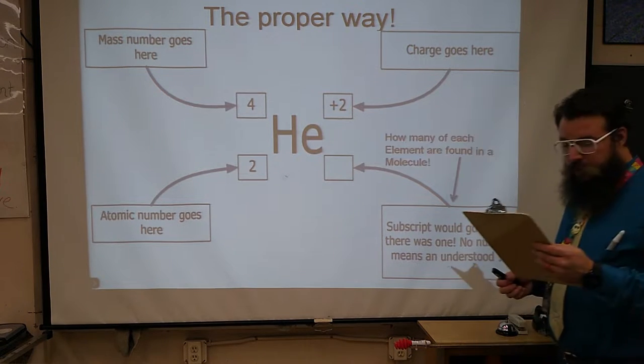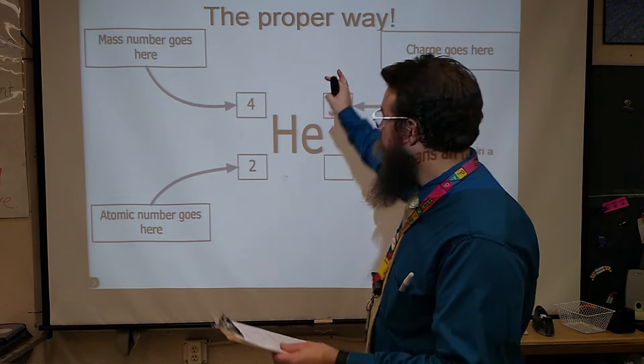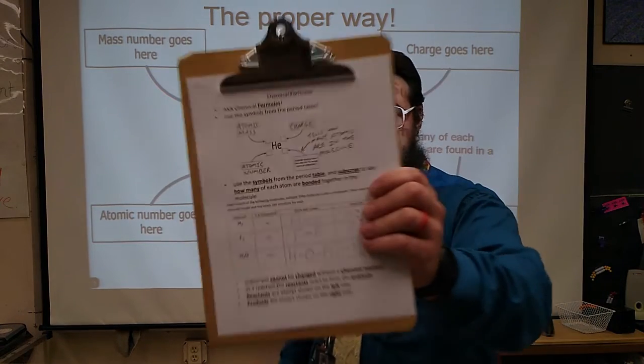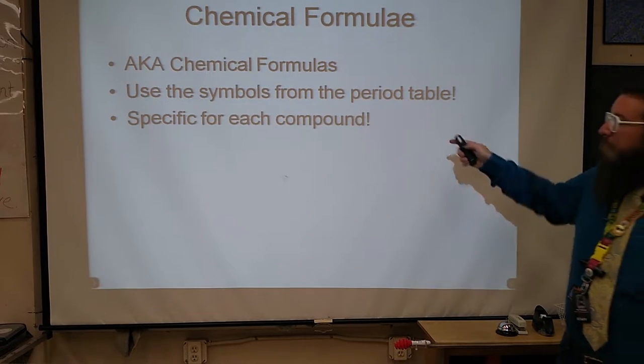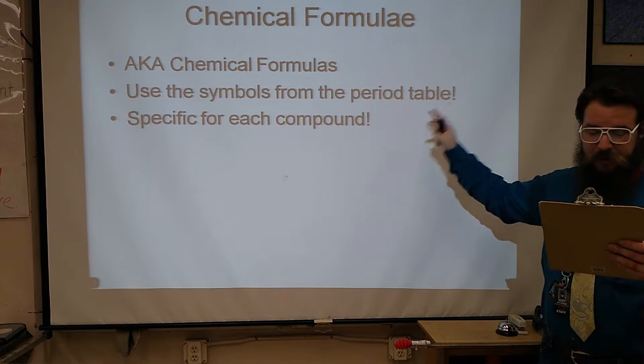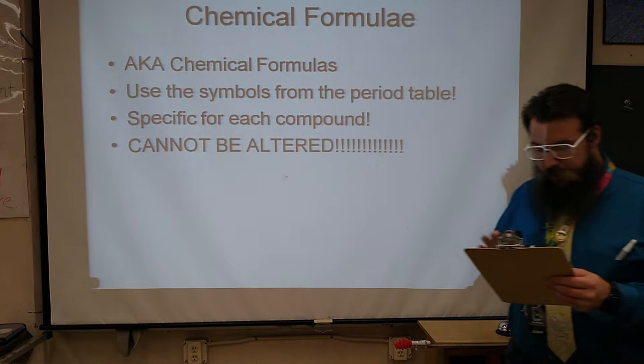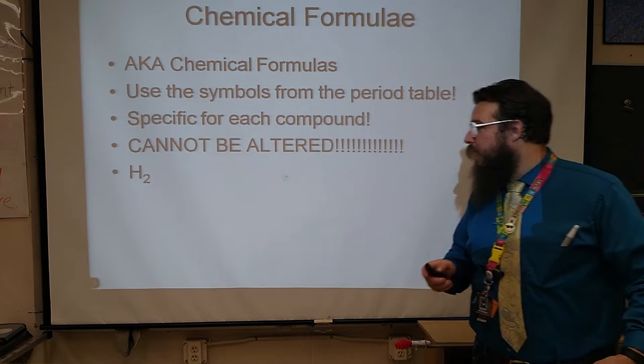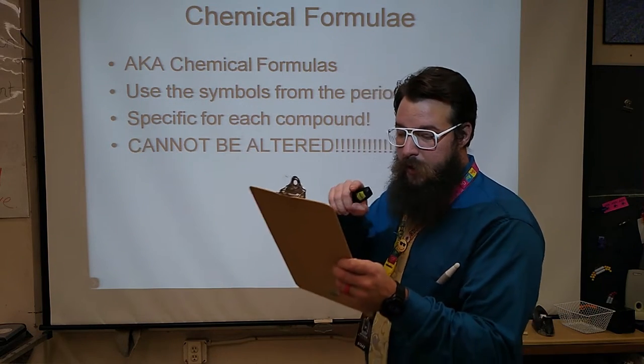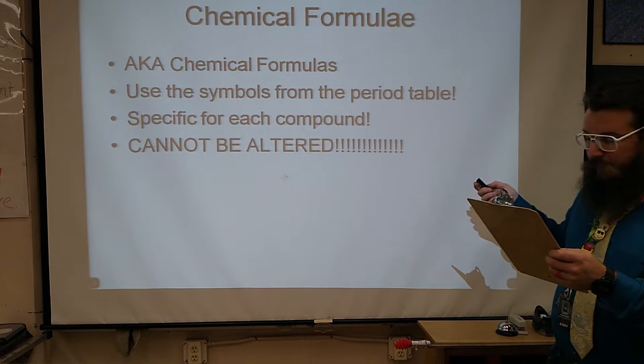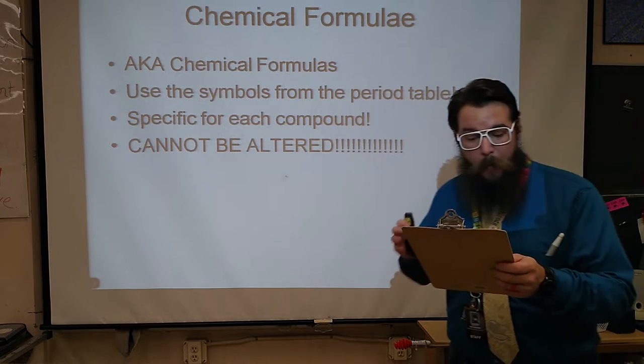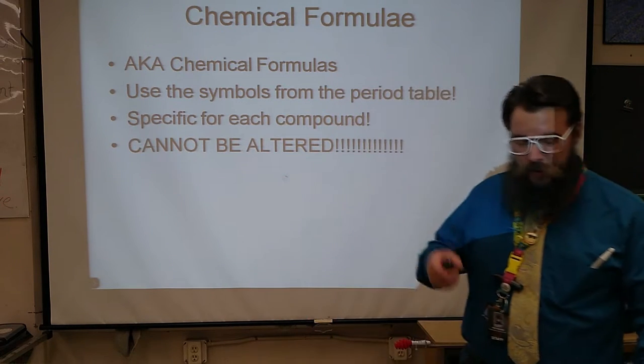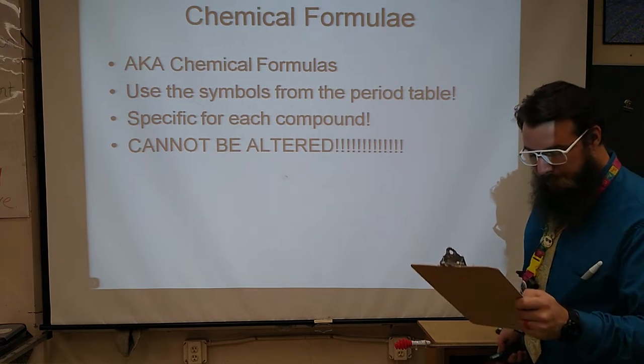So far, it should be feeling pretty good. Do us a favor if you haven't already labeled your symbol, make sure you do that. And make sure that you label the subscript as telling you how many of each atom are found in the molecule. Your notes should look kind of like these. So we're going to use that same symbol from the periodic table. We're going to have a specific symbol for every single compound that we're going to use. Those symbols cannot be altered. If you've got, for example, H2, you're going to leave that H2. You're not going to alter that. If you need to hear it again, go ahead and rewind it.